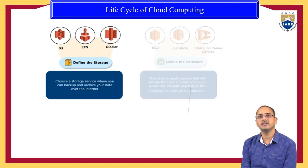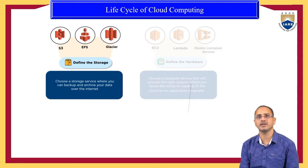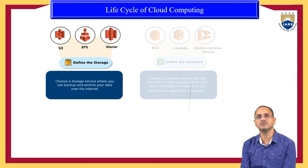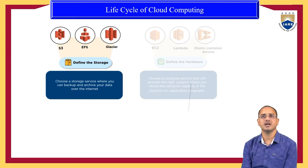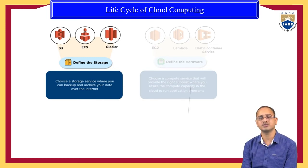The next step is defining the storage. After defining purpose and hardware, the third step is to define the storage. We choose a storage service where we can back up and archive our data over the internet. We need to select a data storage service to store data relating to our application on the cloud. The services provisioned here are S3, EFS, and Glacier — three storage services that allow us to store and back up data, accessible from anywhere at any time, which is one of the key characteristics of cloud computing.